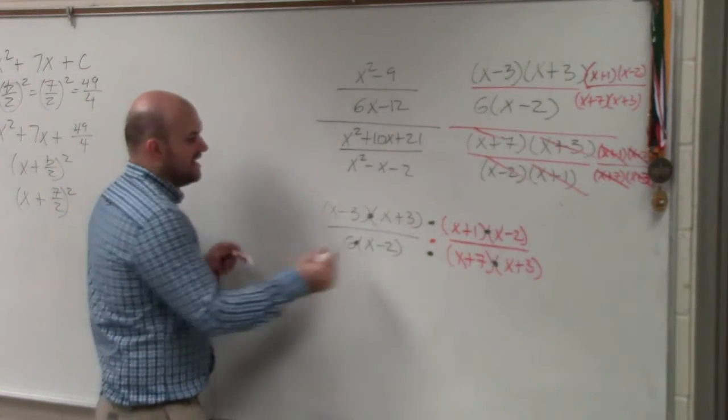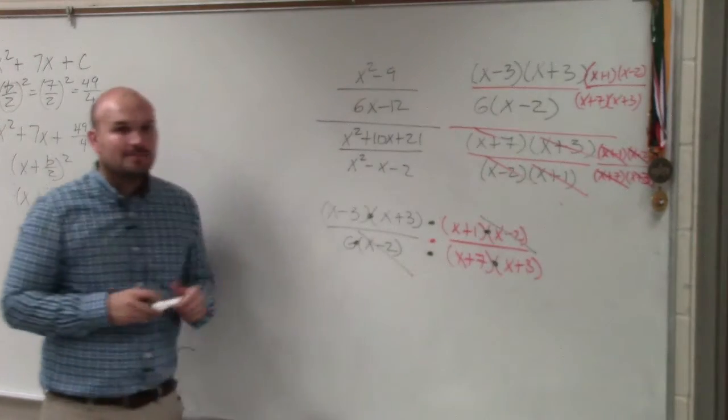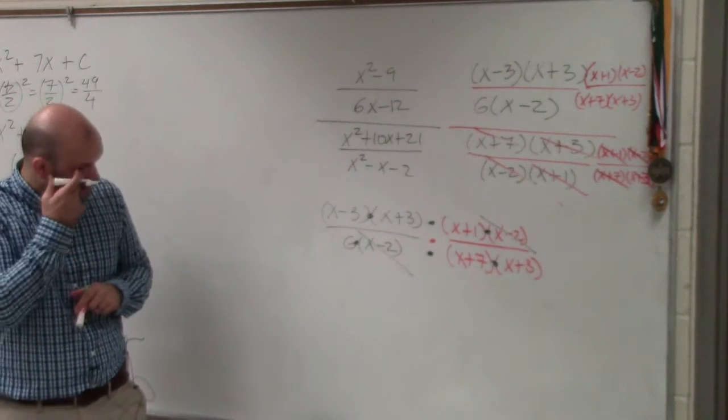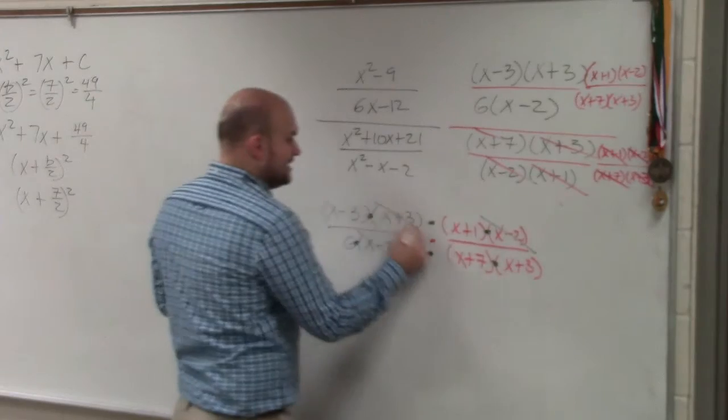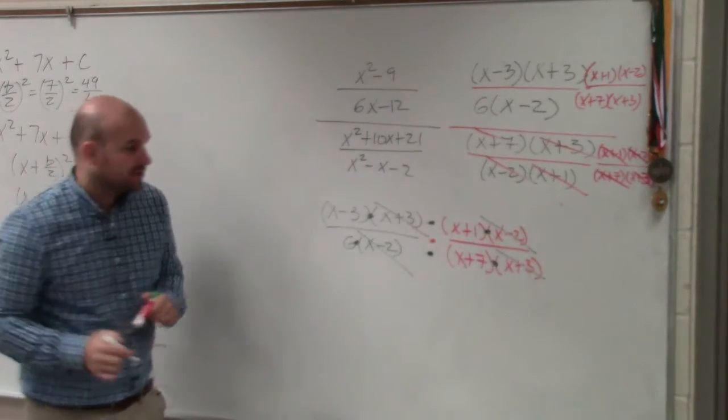So here, you can see that x minus 2 and x minus 2, by use of the division property, goes to 1. And then I have x plus 3 and x plus 3. By division property goes to 1.